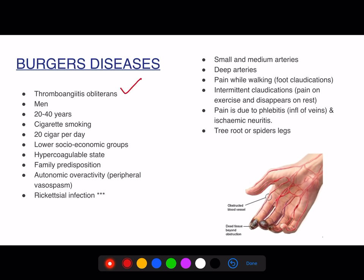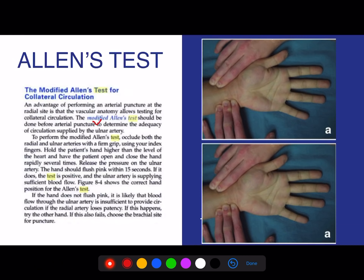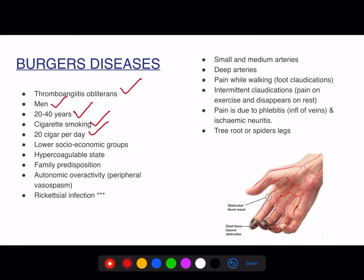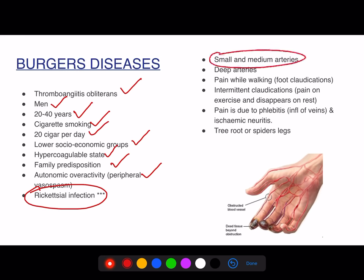Buerger's disease features: most common in men, age 20–40, smoking is the primary etiology (20 cigars per day), low socioeconomic status, hypercoagulable state, family history, and peripheral vascular spasm. The associated infection mainly affects small and medium arteries, not larger arteries — mainly the deep arteries. Tree roots or spider roots are seen. Foot claudication and pain are important features.